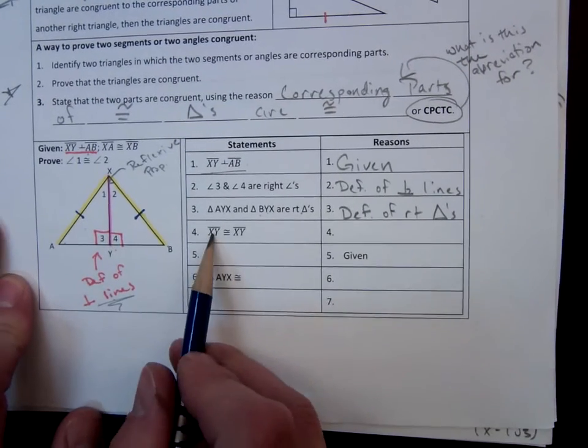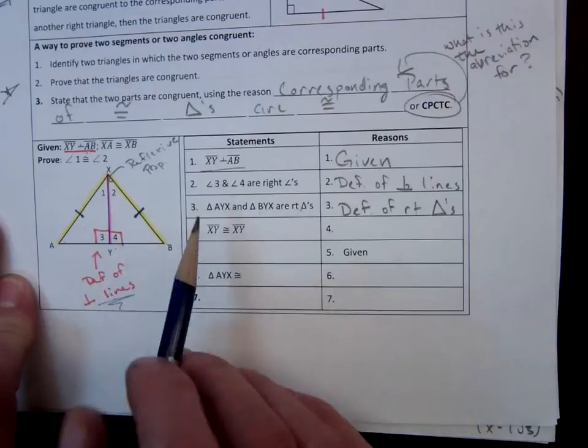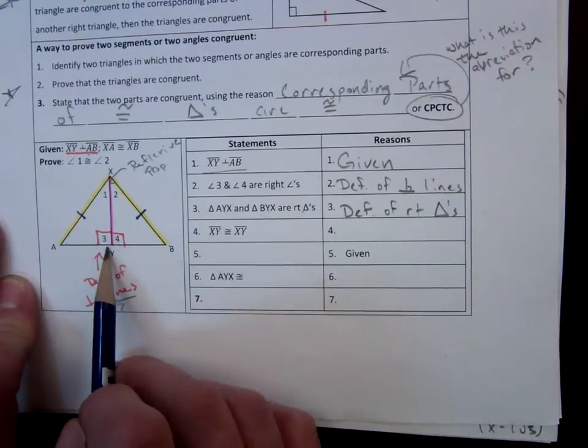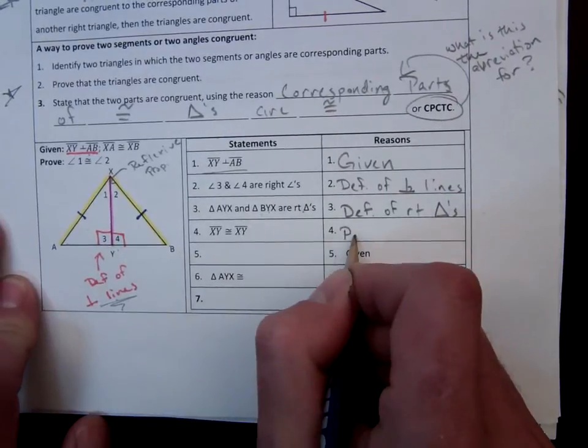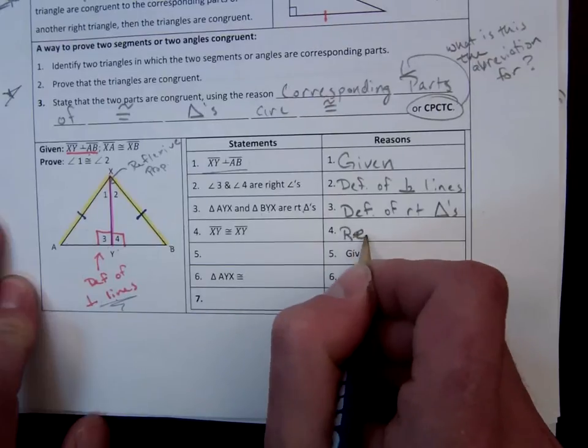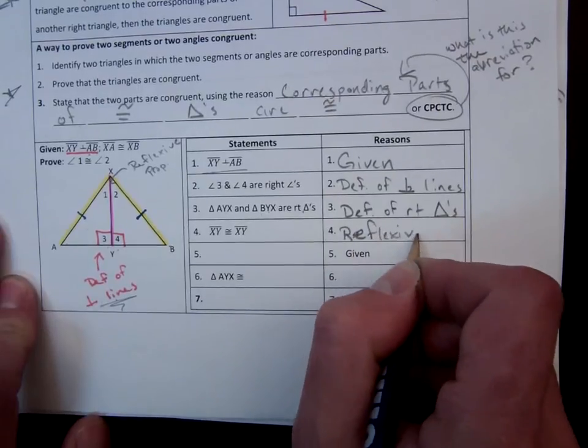Now, they go ahead and they make that statement that I predicted they'd make, that XY is congruent to XY. And we already went over that that is because of the reflexive property.